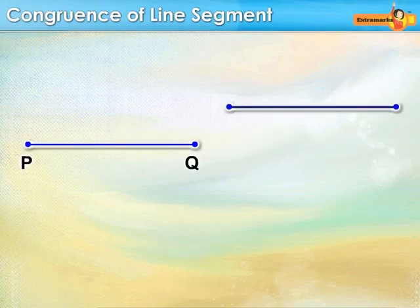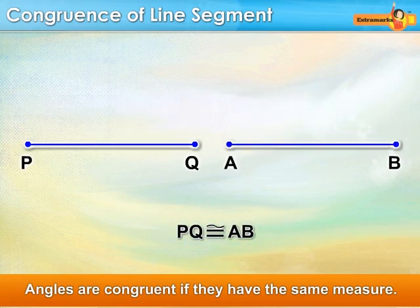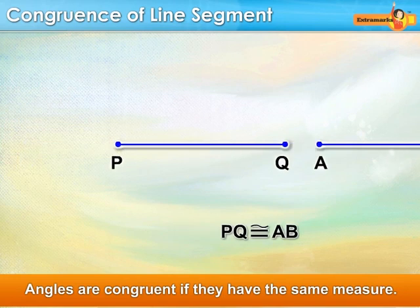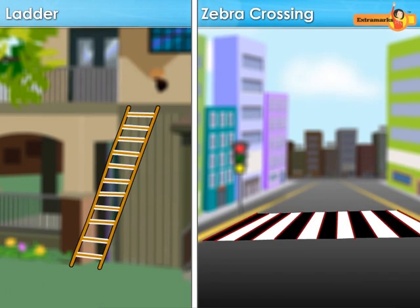Similarly, we have congruence among line segments. Here, these line segments are congruent as they have the same length. The ladders and the zebra crossing are some of the examples of congruence among line segments.